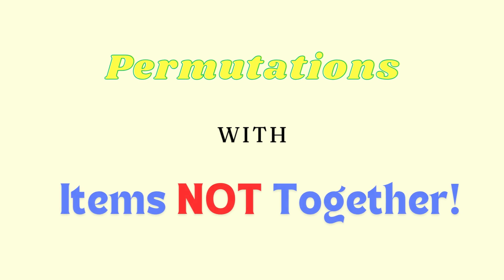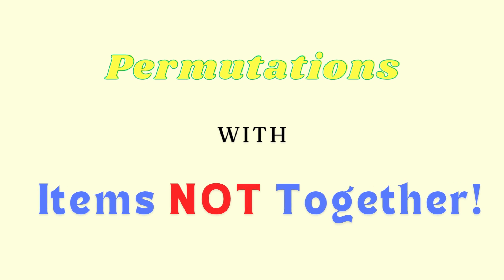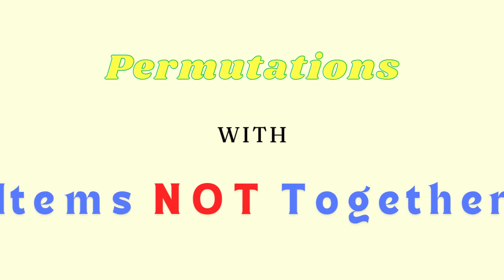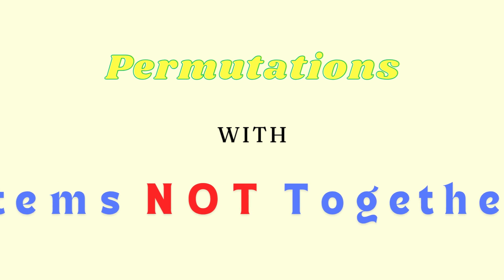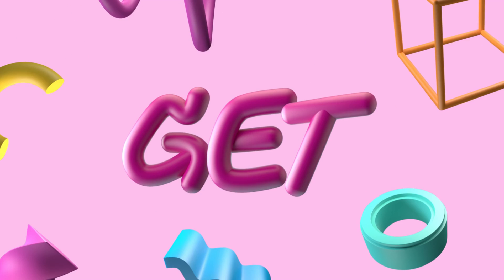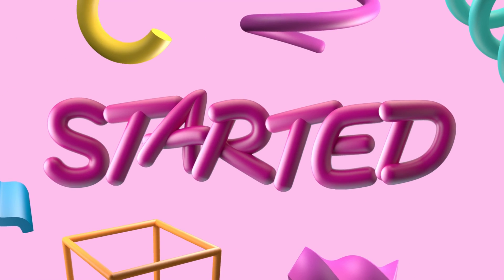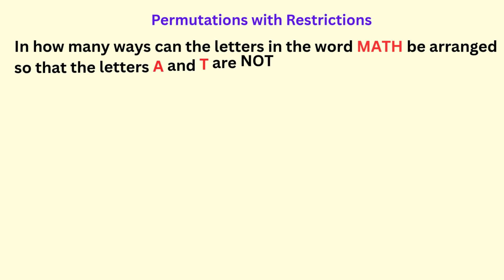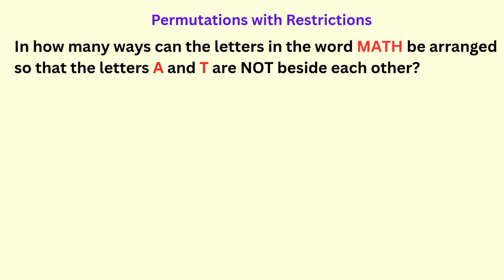In this lesson, we will be looking at permutations of objects where specific items are not together. In how many ways can the letters in the word MATH be arranged so that the letters A and T are not beside each other?